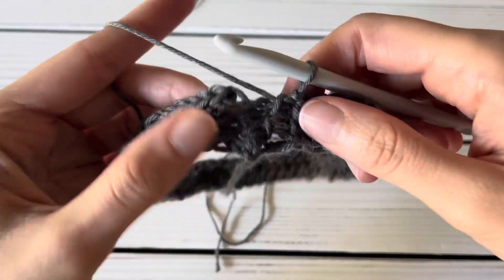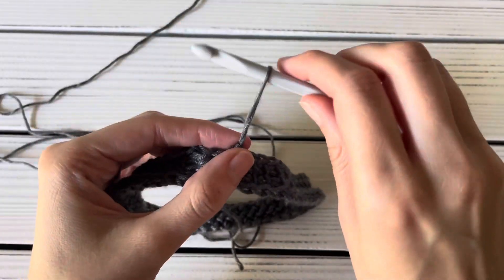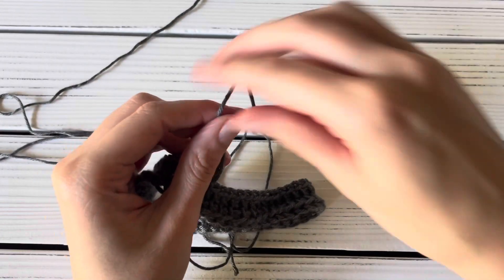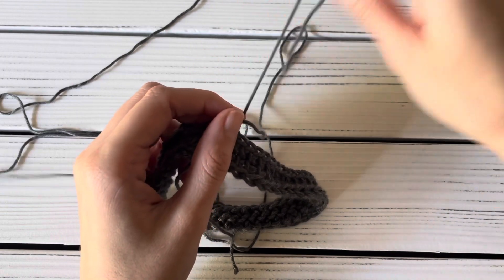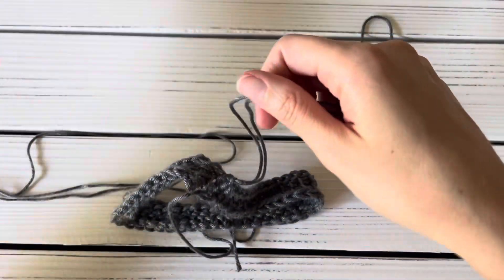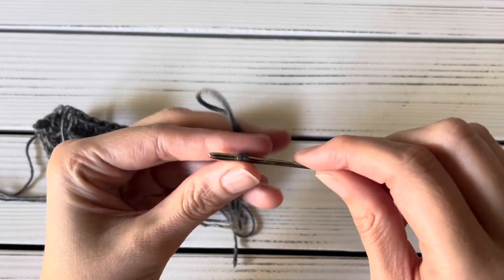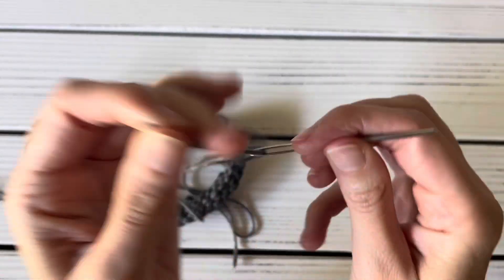When you are done, pull a loop out, and then you would cut your yarn. I'm not going to cut my yarn since I will be using this again for another tutorial. And then thread it onto your darning needle.